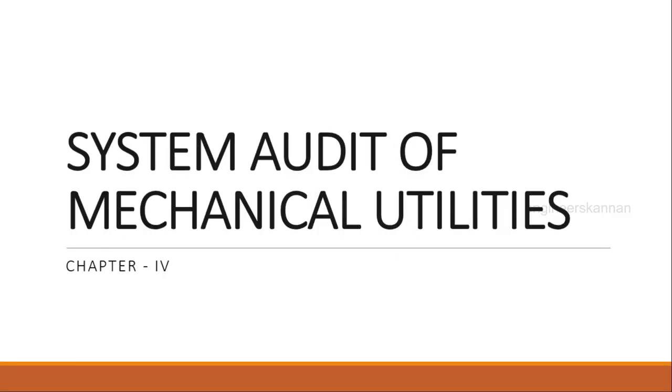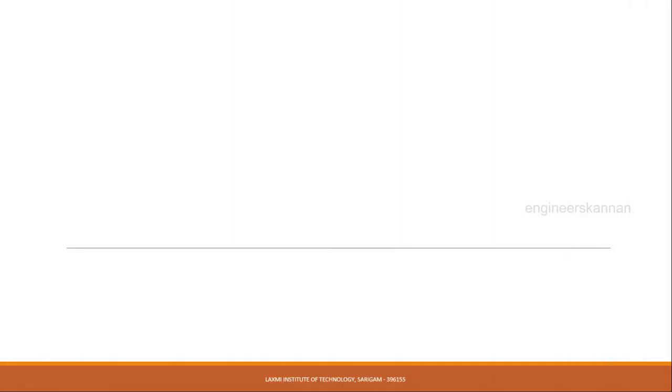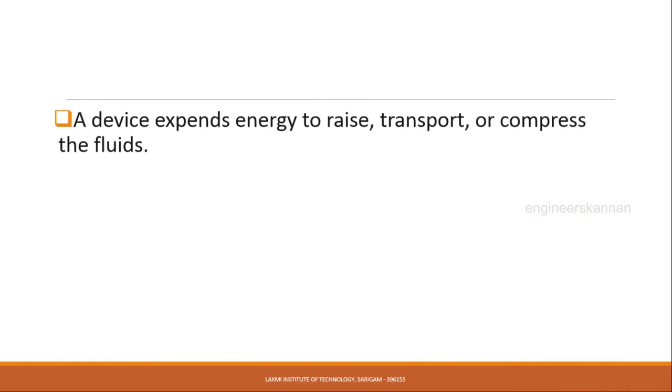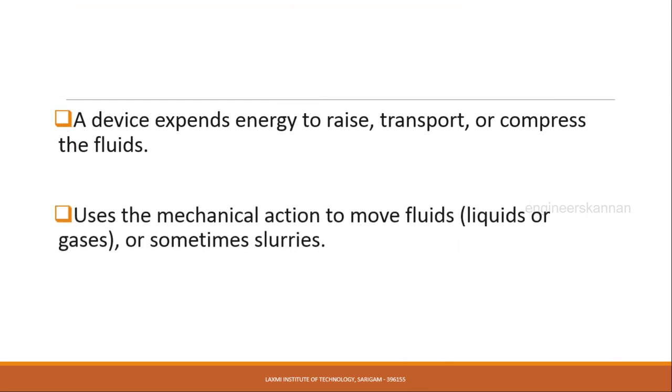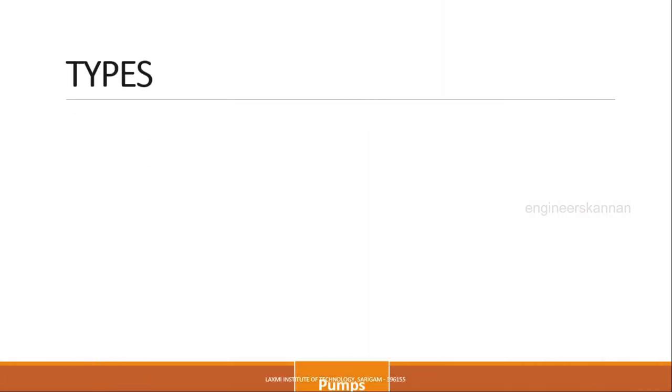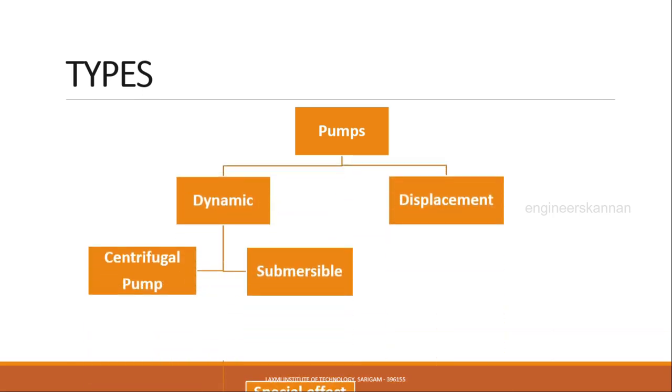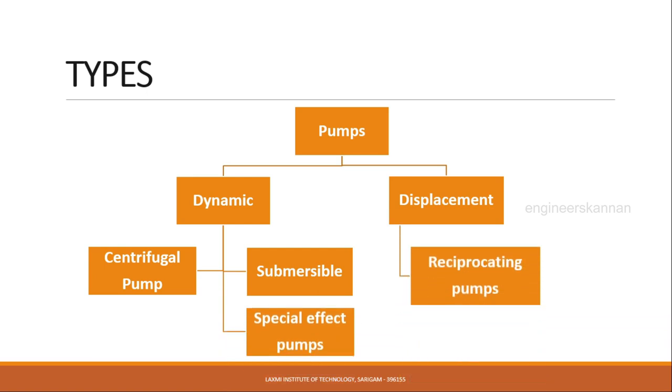This video explains system audit of mechanical utilities. The first part is about pumps. A pump is a device which expends mechanical energy to rise, transport, or compress fluid. It also transports slurries sometimes. Based on application requirements and operating principles, pumps can be classified into two types.